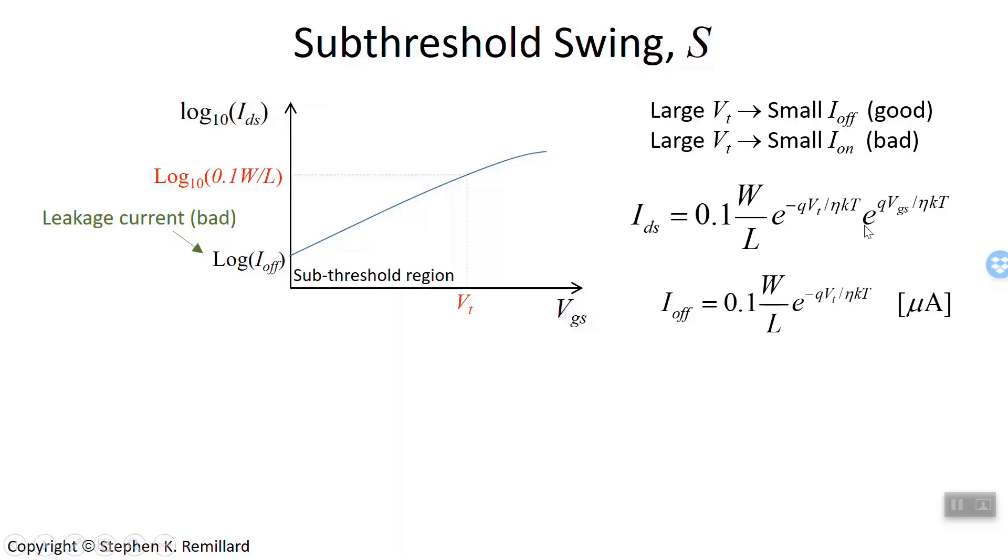Let's take a look at this factor e to the q V gate source over eta kT. I want to calculate it for various values of gate source voltage. So for different gate voltages, I'm going to write the gate voltages in terms of eta. Why? Because you can. Eta is a dimensionless number, very close to one. So for gate voltage of 100 millivolts times eta or 160 millivolts times eta and so on, I will calculate the value of this exponential.